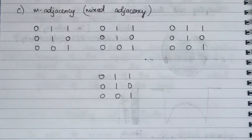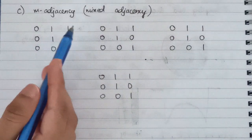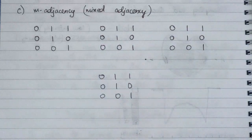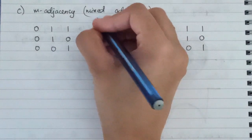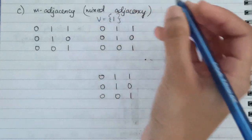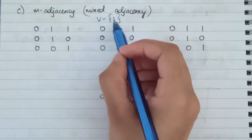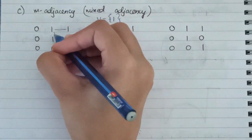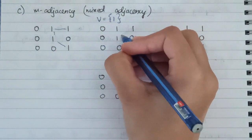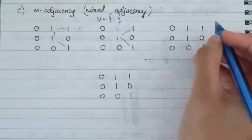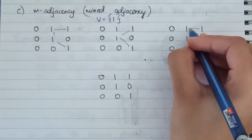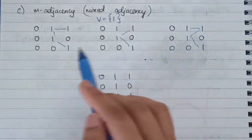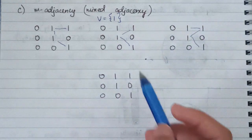Now let's look at mixed adjacency, also known as m-adjacency. If you look at this binary image with set V = {1}, there are many ways to make connections using just the ones. They can be connected like this, or like this, or yet another way — there are many paths, and this gives rise to ambiguity.